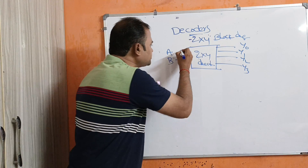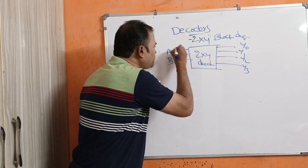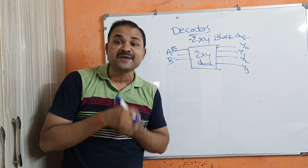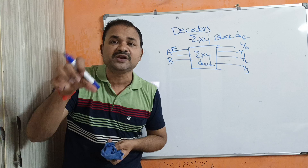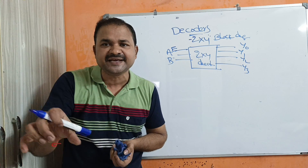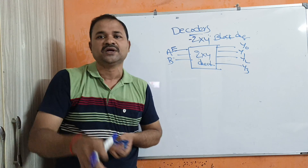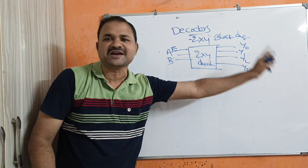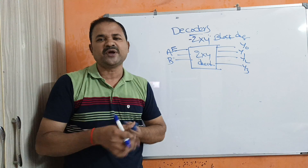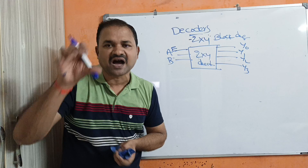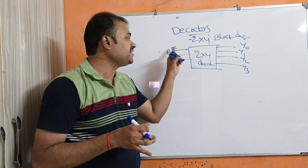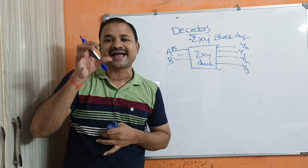Here we also have another input called E, which stands for enable input. If the enable input is inactive — that is, if enable is low — then the decoder does not produce any output, irrespective of the input. The decoder produces output only when the enable input is active.